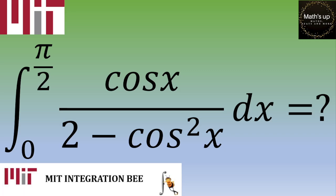Hello and welcome. In this video for this exercise given during the MIT Integration Bee 2018, we have an integral to calculate: integral from 0 to π/2 of cos x over 2 minus cos² x dx. If you want to give it a try, please pause the video; otherwise, let's see the solution.